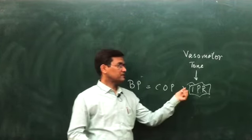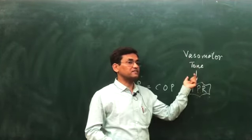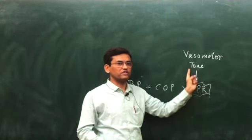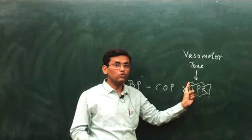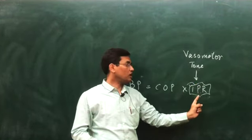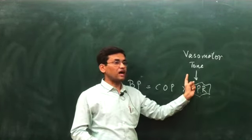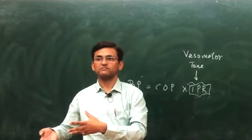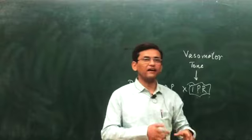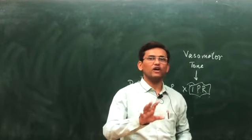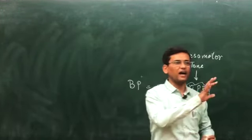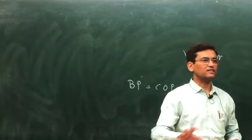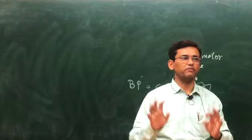This resistance is consistently present because some neuronal discharge is coming onto the vasomotor system, giving it vasomotor tone. The peripheral arteries are supplied by the sympathetic system. The entire vascular structure — except for the capillaries — is supplied by sympathetic neurons.